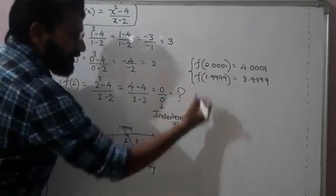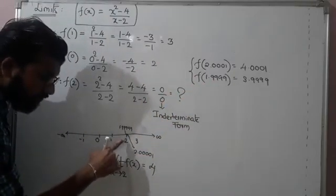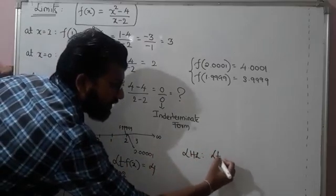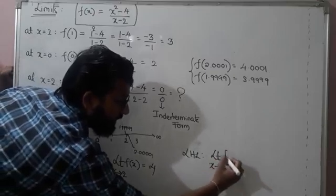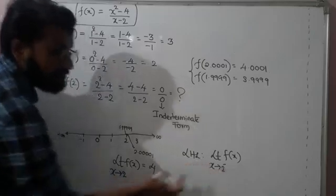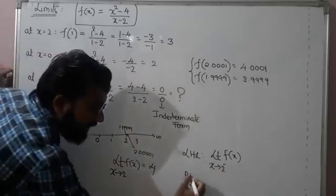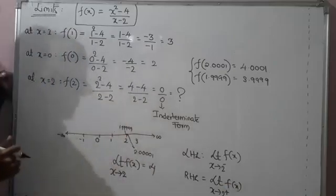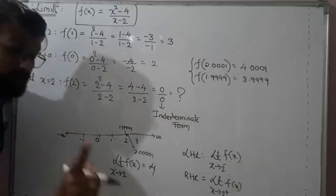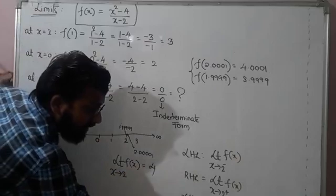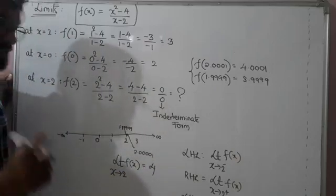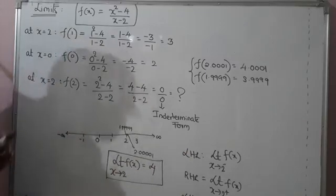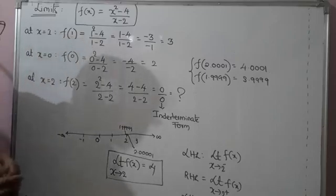Getting the value of the function just to the left of a given value is called the left hand limit, denoted as: limit as x → 2⁻ of f(x). The right hand limit is: limit as x → 2⁺ of f(x), meaning we take a value just to the right of 2. For the limit to exist, both the left hand limit and the right hand limit must be equal. This is how the concept of limit started.